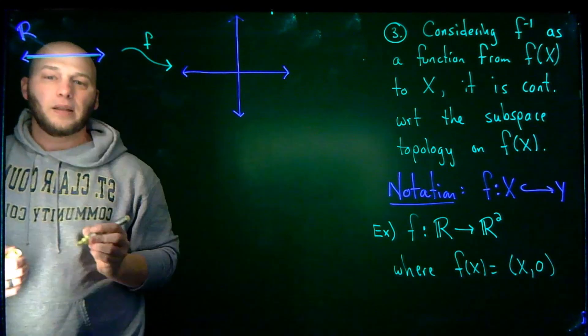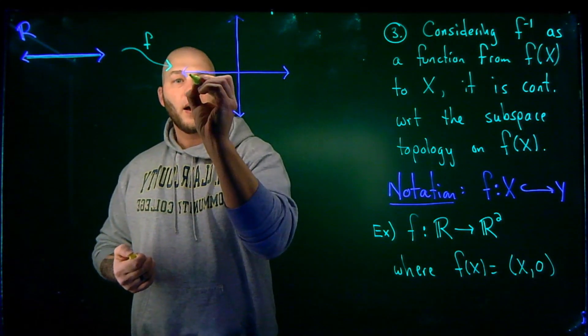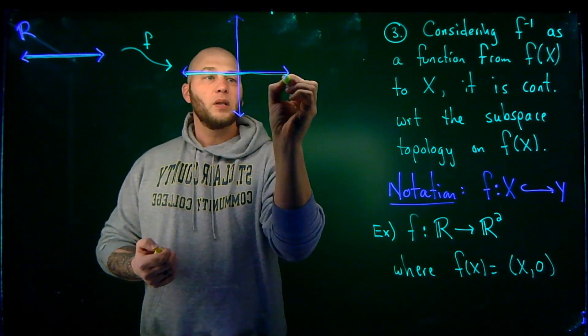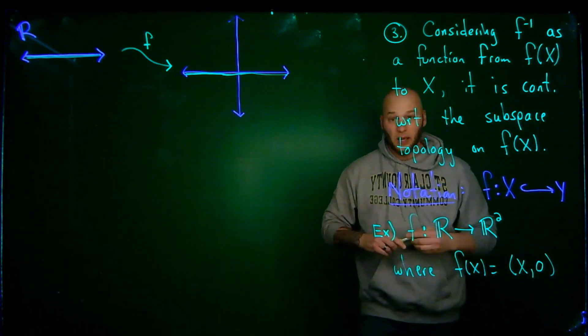And what that's going to do, let me see if I can pick a different color here and have it show up. What that's doing is it's taking this copy of the real line, so I'm going to draw it right underneath it. So I'm taking that copy of the real line, I don't know if you can actually distinguish that on the screen or not, and it's actually placing it on the X-axis. So it's simply embedding a copy of the real line onto the X-axis into the plane.